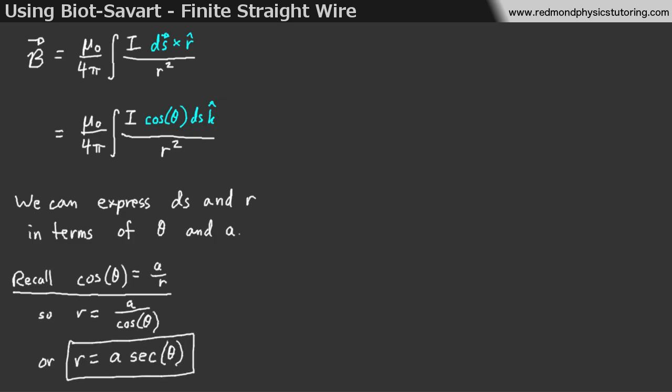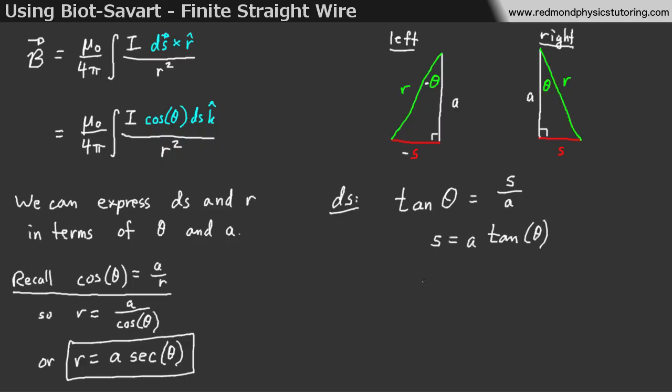Then, if we actually look at the triangles again, we can set up an expression for tan theta is equal to s over a, where s is the distance from the origin to where dS is. Then, s is equal to a tan theta, and if we take the derivative of that, we get dS is equal to a times secant squared theta d theta.